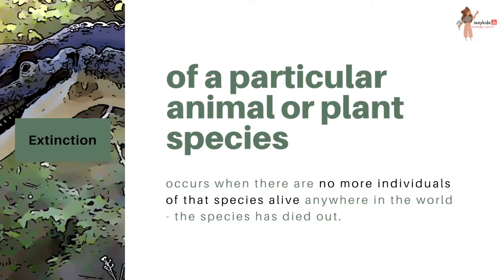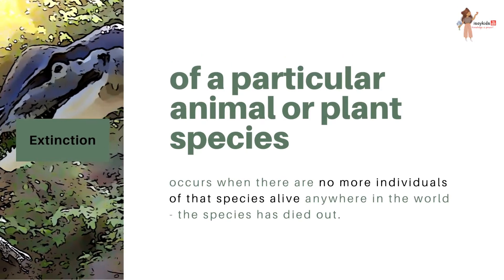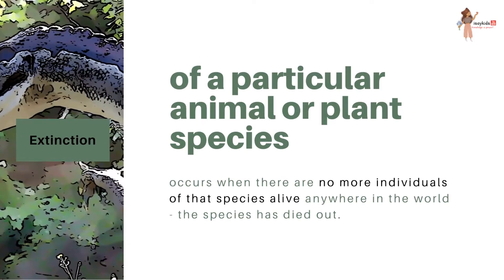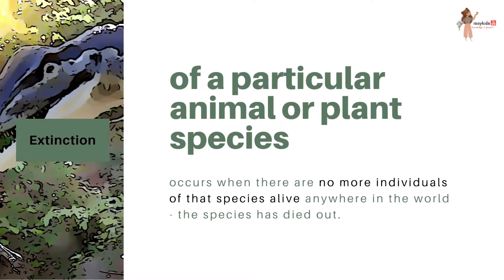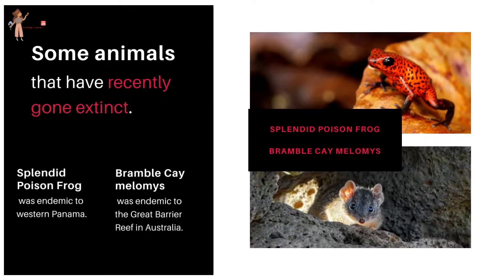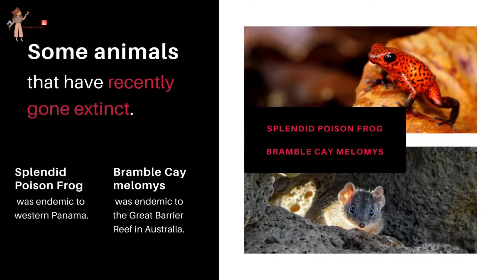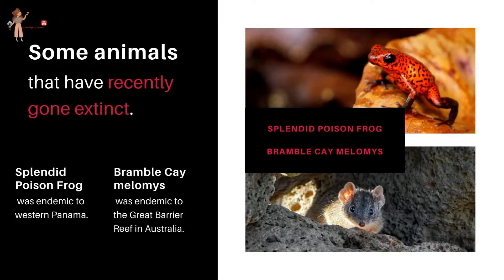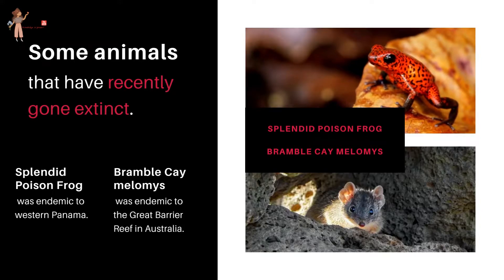What are extinct species? Species of plant or animal that are no more — there is no individual of that species alive anywhere in the world. The species has died out. The Splendid poison frog, which was endemic to Western Panama, and the Bramble Cay melomys, which was endemic to the Great Barrier Reef in Australia, are some animals that have gone extinct very recently.